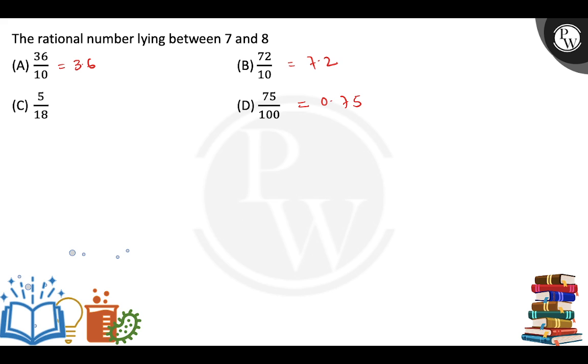Now, first of all, 5 by 18. 5 by 18 is here. 5 is the numerator and 18 is the denominator.